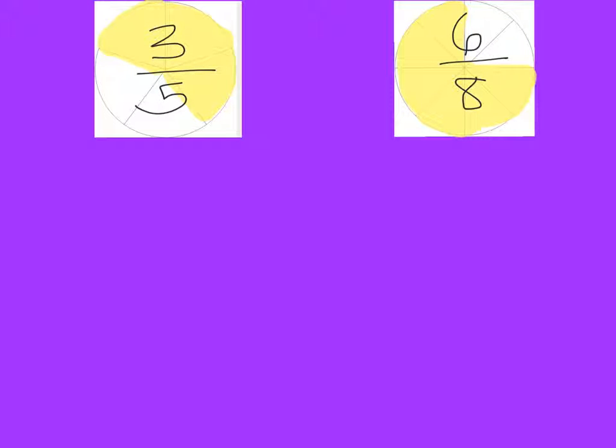However, we can't tell for sure which one is greater than, less than, or equal to each other. This is when we find common denominators, just like we did in the last problem.